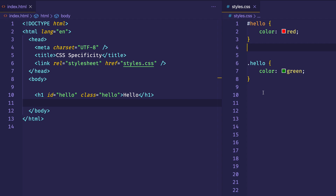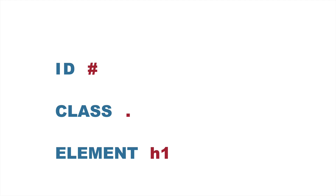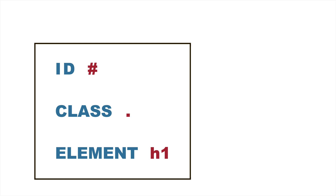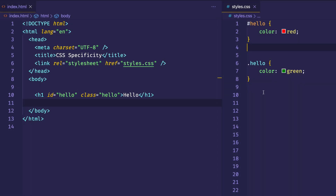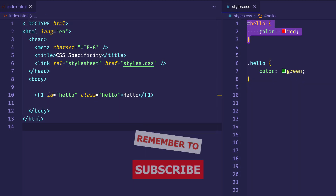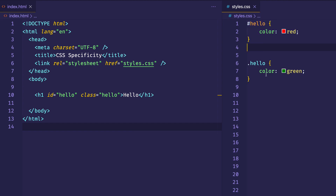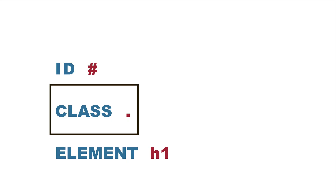There are certain specificity rules which we need to learn, and that's what we're about to do right now. The most important thing to start understanding is how these three types of selectors relate: ID, class, and element. I've listed them in this order because this is the order of importance or weight that the browser gives to each one when deciding which to apply. The ID is the one that gets the most weight — it won out regardless of whether it was after or before class hello. Second on that list is the class, which is given more weight than the element selector.